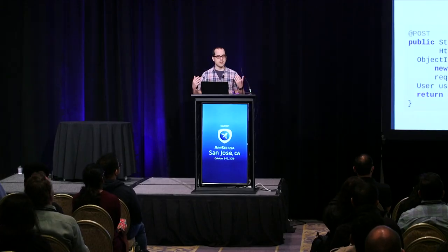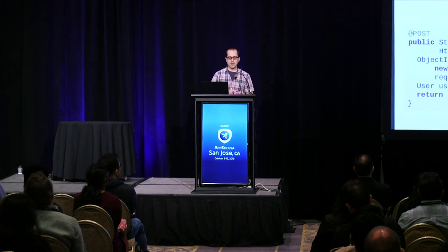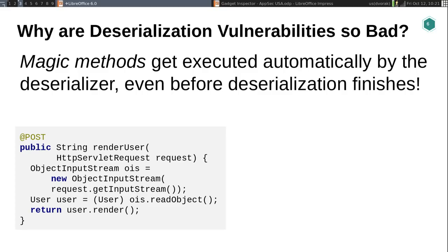So why are deserialization vulnerabilities so bad? If they were just what I described on that first slide, they probably wouldn't be that interesting. The reason they're so bad is that there are these things called magic methods that classes can implement to control how they get serialized and deserialized. And because they control how deserialization happens, they get invoked before the deserialization actually finishes. So there is code that's going to get magically run depending on what class is in the payload — and it has nothing to do with what you're actually casting it to on the other end.